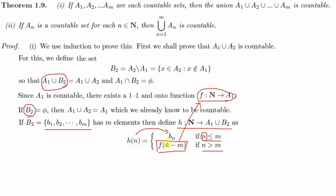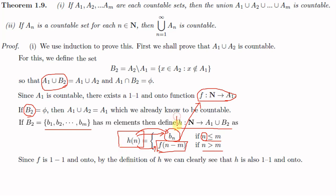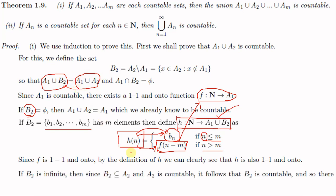Since f is one-to-one and onto, and h(n) = f(n − m) for n > m, for each different value of n we get different values. We can conclude that h is also one-to-one and onto. This means the function h from ℕ to A1 ∪ B2 is a bijection, so A1 ∪ B2 is countable. Since A1 ∪ B2 = A1 ∪ A2, we conclude A1 ∪ A2 is countable.